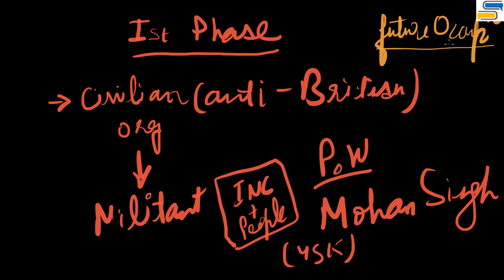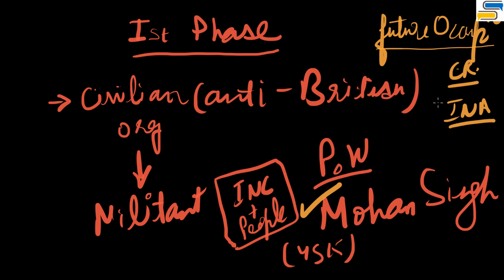Regarding the C. Rajagopalachari plan — he was very concerned that tomorrow India might be ruled by the Japanese, so he introduced his CR plan as a non-violent way. The violent way was introduced by Mohan Singh in the shape of INA as a bulwark against future Japanese occupation. Whenever you talk about Japan, there are two levels: the non-violent method and the violent method of saving India, though the army was hardly ever actually used against the British.